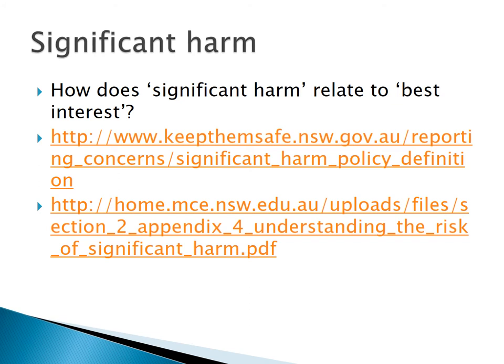An aspect that is also very important is what is referred to as 'significant harm.' For a child to be removed, it is not enough to establish that the child is at risk of being harmed — there must be a risk of significant harm. This may not always work in the best interest of the child, but this principle was introduced because services were being overwhelmed with cases. To prioritize the highest-risk cases, the principle of significant harm was introduced.